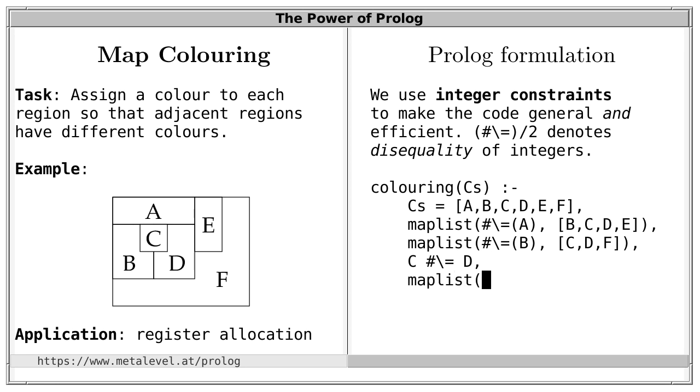Then, D must be different from E and F. And finally, E must be different from F. So, we have now specified everything that must hold for a valid coloring. That's the complete definition, which is quite short and convenient.